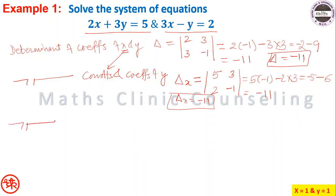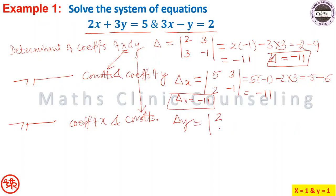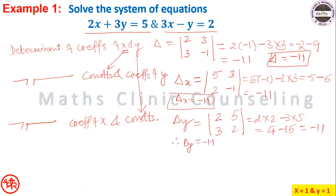Step 3: determinant of coefficients of x and constants gives delta_y. Replace the y-coefficients with constants, keeping x-coefficients 2 and 3. So delta_y equals the determinant [2, 5; 3, 2], which is 2·2 minus 3·5, that is 4 minus 15, equal to minus 11.